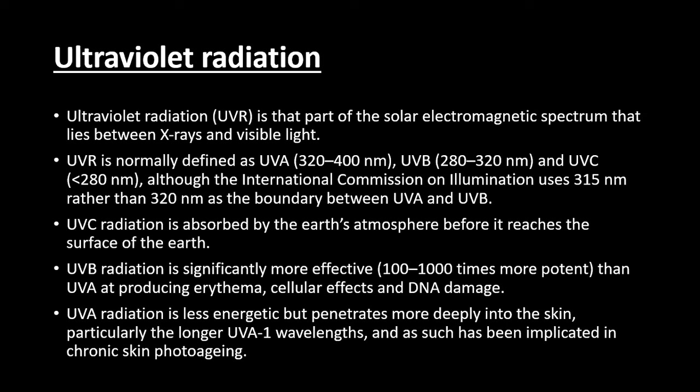Ultraviolet B is between 280 and 320 nanometers, and ultraviolet C is less than 280 nanometers. The International Commission on Illumination now makes the cutoff between UVA and UVB as 315 nanometers rather than 320 nanometers, but in this chapter, 320 nanometers is used on most occasions.